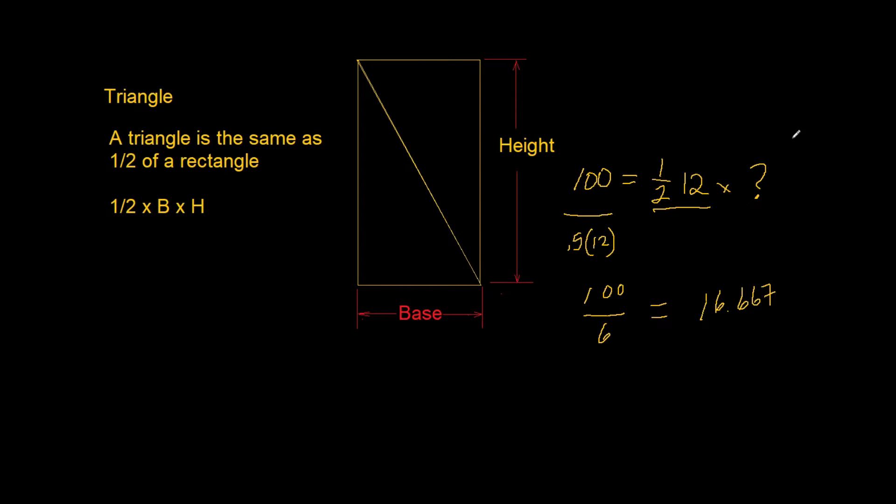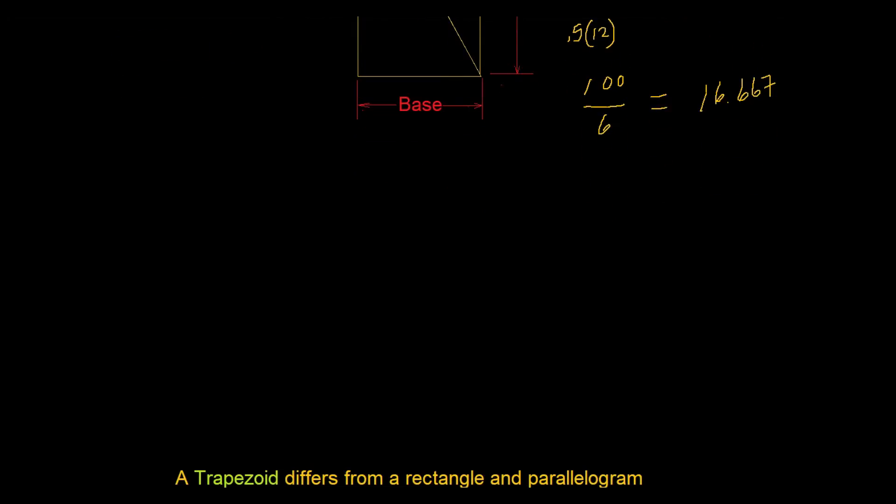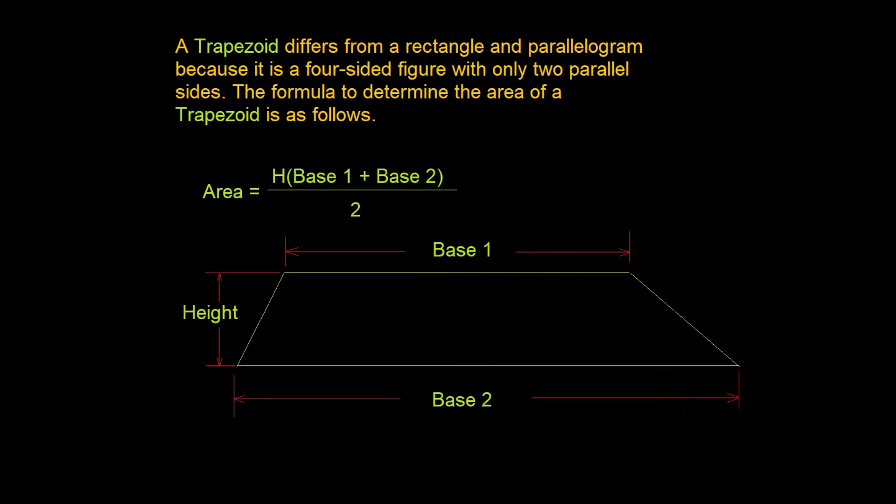So let's scroll down and we'll look at trapezoids. Now trapezoids differ from rectangles and parallelograms because only two of the sides are parallel. In a rectangle or a parallelogram, all four sides are parallel to their opposite sides.